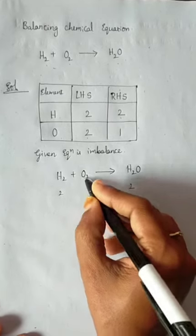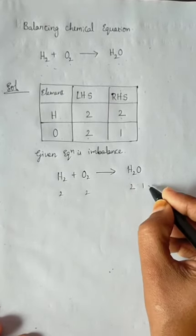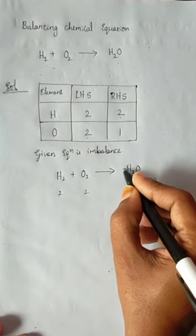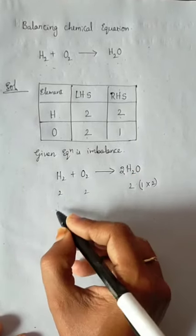2 hydrogens, 2 hydrogens. Oxygen 2, oxygen 1. So we have to multiply with 2 here. Then we need to write 2 here. Again, let's check.